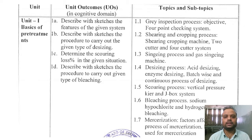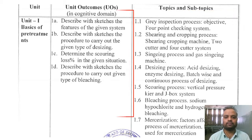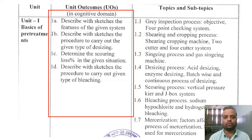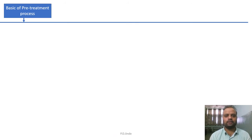Once you completely understand the topics and subtopics, you will be able to answer the UOs — UOs means Unit Outcomes. In this syllabus, the middle column denotes the UOs. There are basically four UOs, and they are in the form of questions that you can answer once you completely understand the topics and subtopics of Unit 1. So today we are about to start Unit 1, beginning with the topic named as Basics of Pretreatment Process and the subtopic Wet Process Flow.